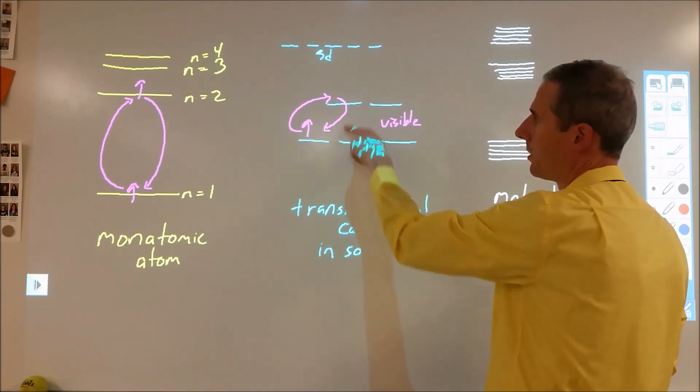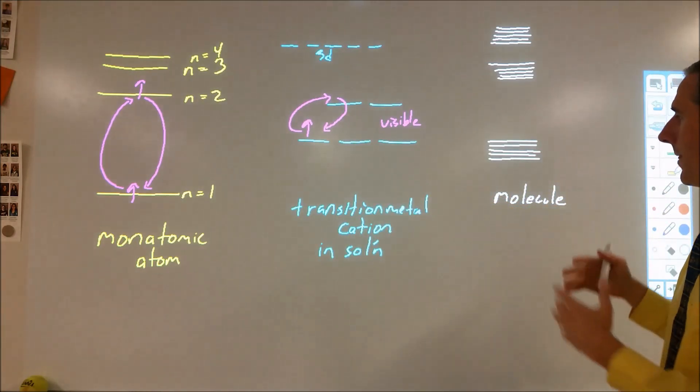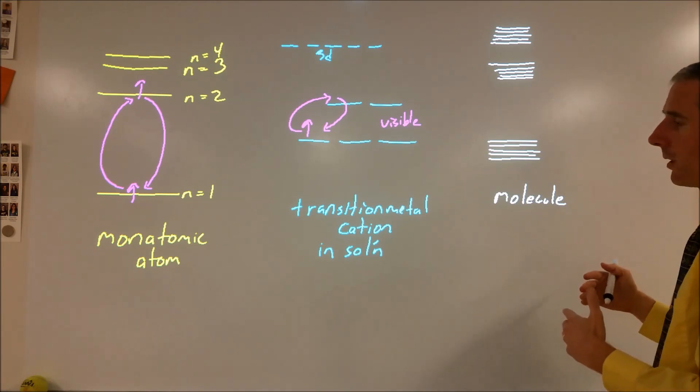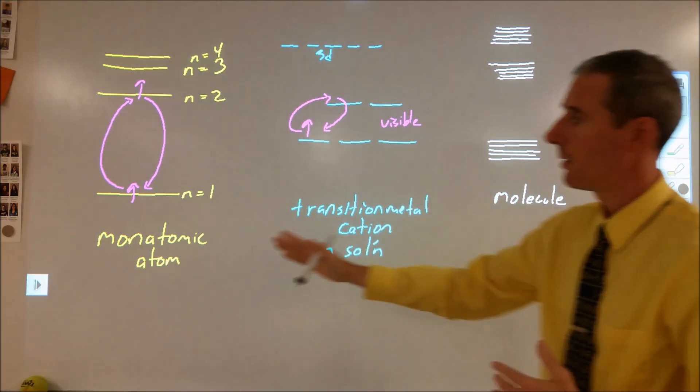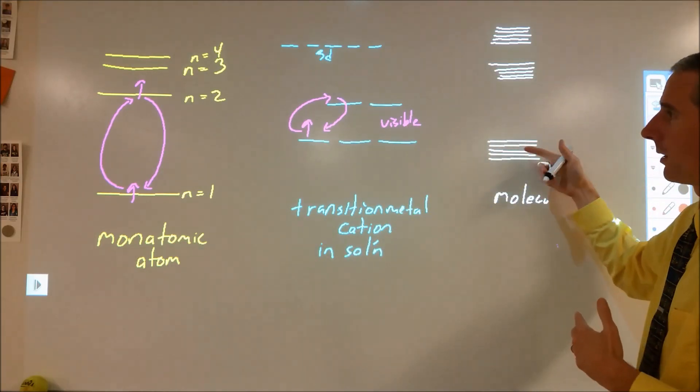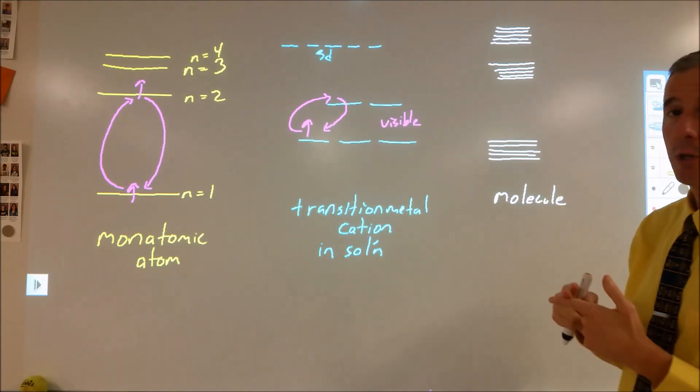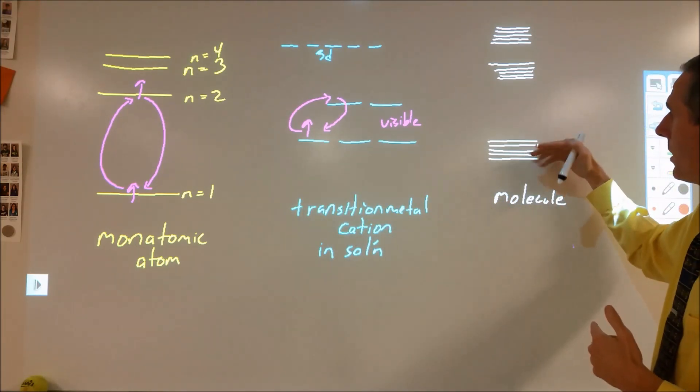What we see happening is that typically this gap is a visible light gap, meaning that red to violet light hits these electrons and that's going to be the difference in energy to match that change. Moving out a little bit further, molecules are more complicated than single atoms.